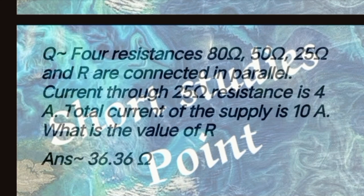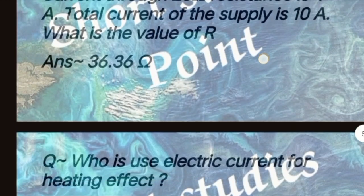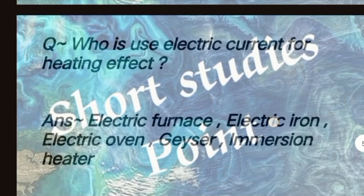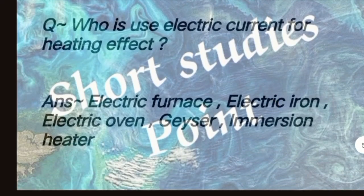Next question: Four resistors of 80 ohm, 50 ohm, 25 ohm and R are connected in parallel. Current through the 25 ohm resistance is 4 amperes and the total current of the supply is 10 amperes. What is the value of R? Answer: 36.36 ohm.